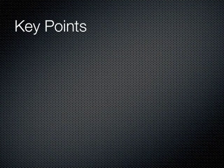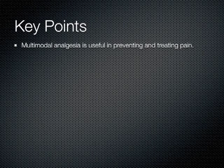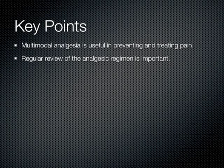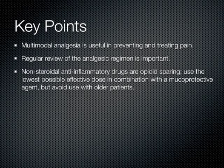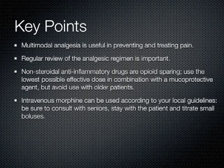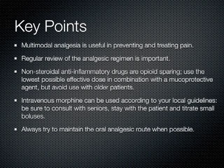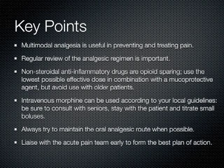Key points: multimodal analgesia is useful in preventing and treating pain. Regular review of the analgesic regimen is important. Non-steroidal anti-inflammatory drugs are opioid-sparing — use the lowest possible effective dose in combination with a mucoprotective agent, but avoid use with older patients. Intravenous morphine can be used according to local guidelines; consult with seniors, stay with the patient, and titrate small boluses. Always try to maintain the oral analgesic route when possible. Liaise with the acute pain team early on to form the best plan of action.